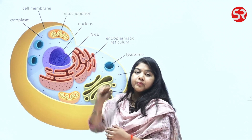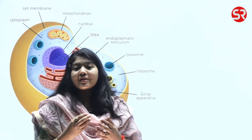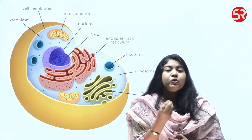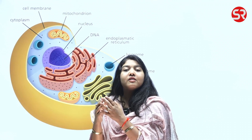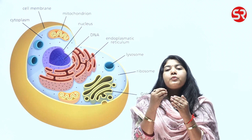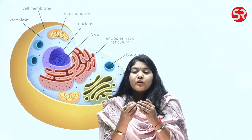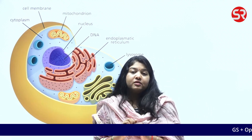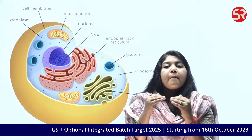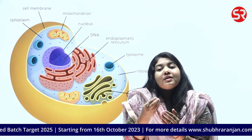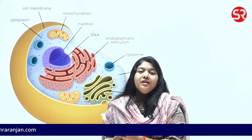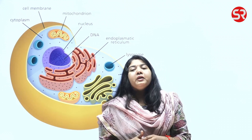The third most important component of the cell is mitochondria. Mitochondria is also called the powerhouse of the cell because it produces ATP — adenosine triphosphate — which is called the energy currency. It is responsible for producing molecules that help in the metabolism process. Mitochondria is important because it helps in producing the energy necessary for respiration and other processes carried on by the cell.